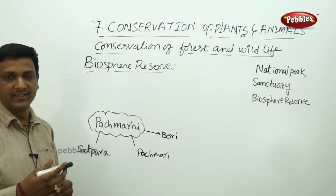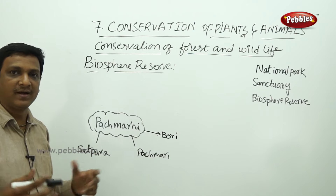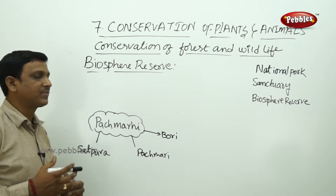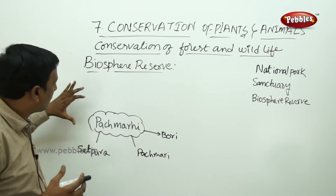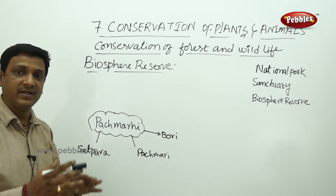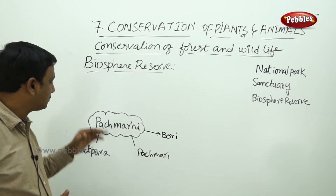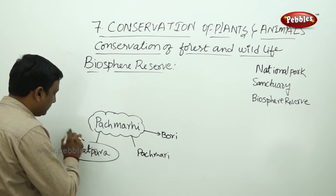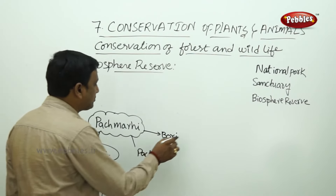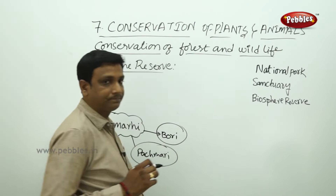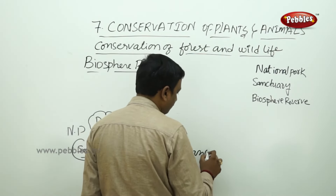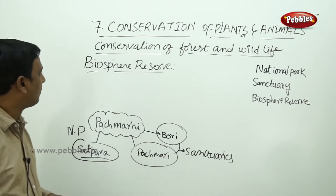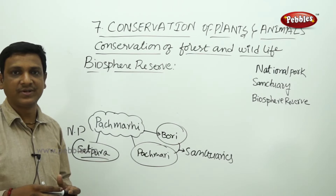A biosphere reserve is a source of biodiversity where you can find a wide variety of plants, animals, microorganisms, and the complete natural forest setup. One example is the Pachmarhi Biosphere Reserve, which is a very large area that may contain sanctuaries and national parks. It consists of one national park called Satpura and two sanctuaries — Bori and Pachmarhi.